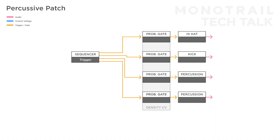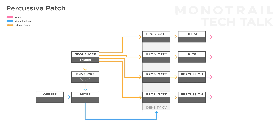To create more controlled temporary random variations, you can modulate the density CV over time. For example, you can use another trigger, perhaps one that occurs only every two bars, and have it trigger an envelope. If you invert that envelope and mix it with a 5-volt offset, you can create a pattern that is passed on normally, but every time the modulation envelope is fired, it will temporarily lower the chance parts of the patterns are passed on, creating a variation every other bar.